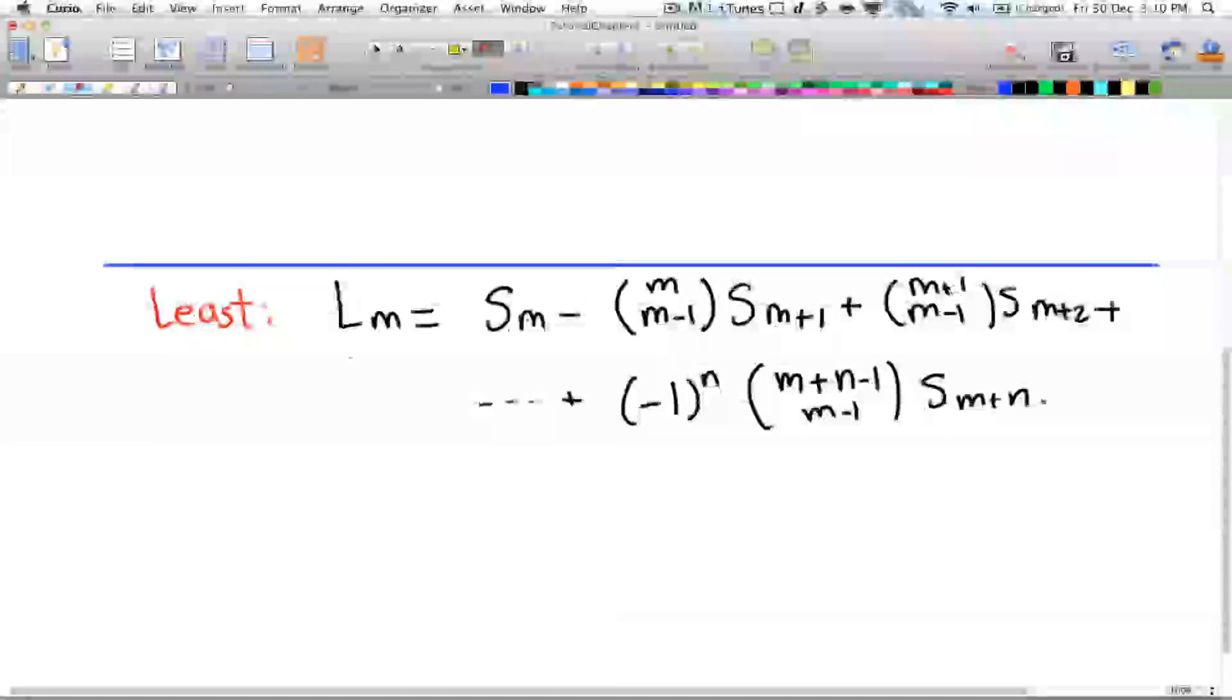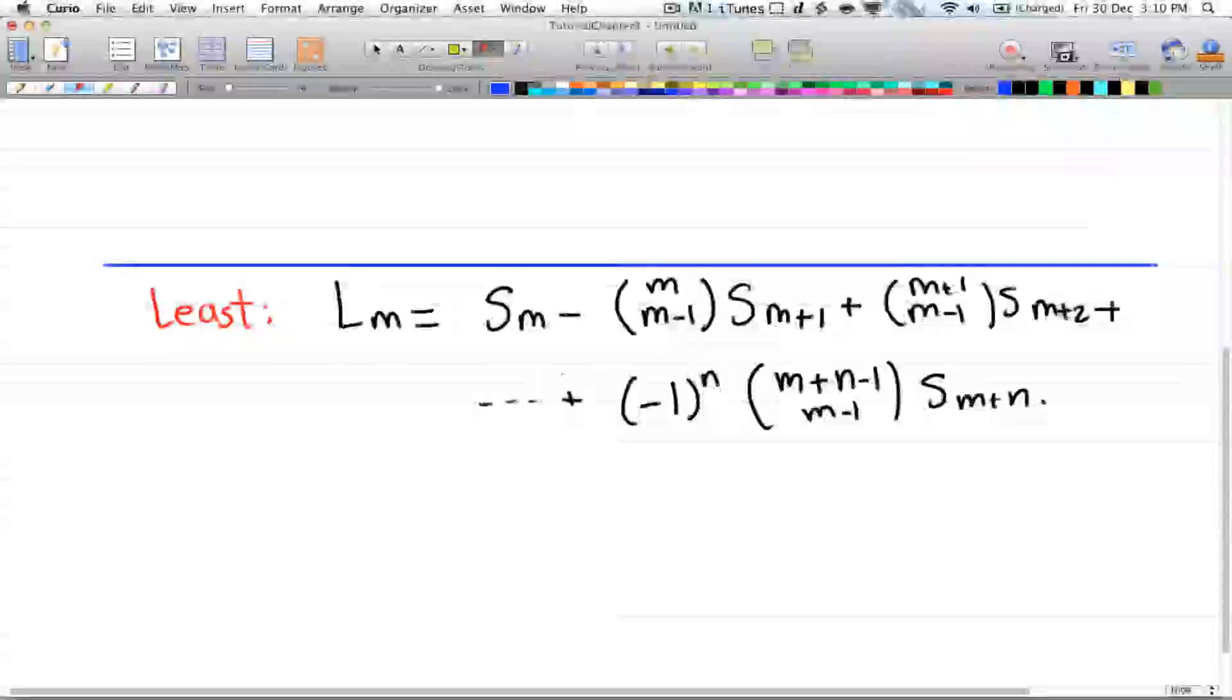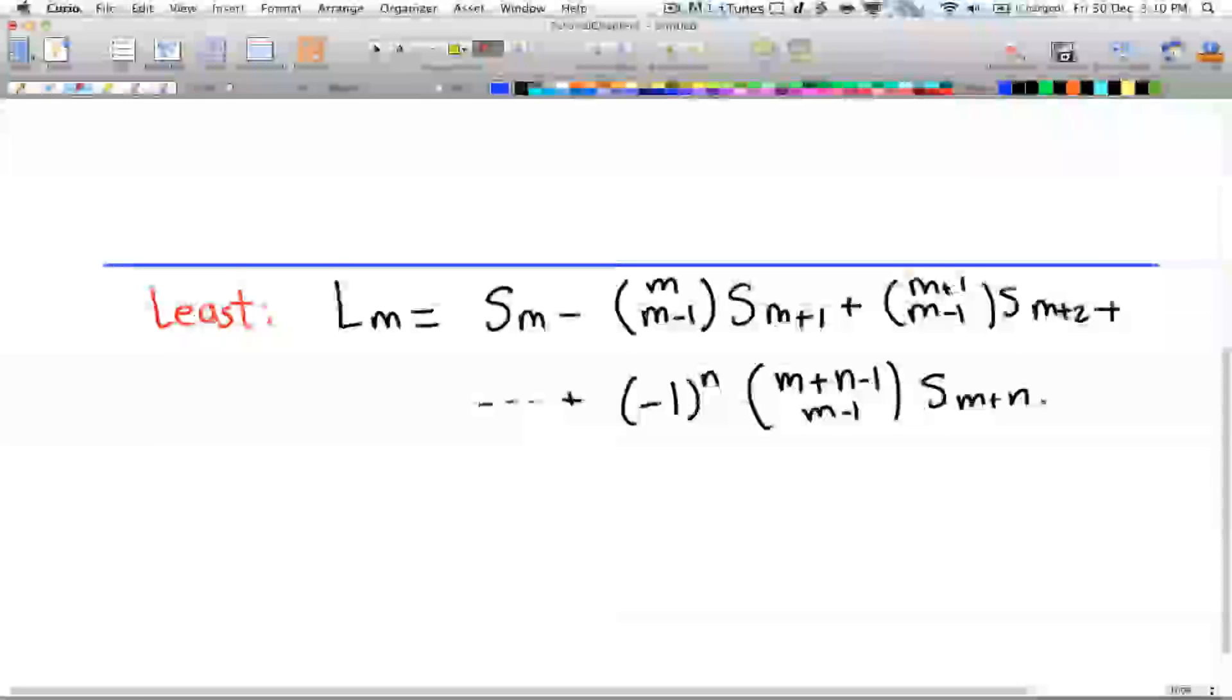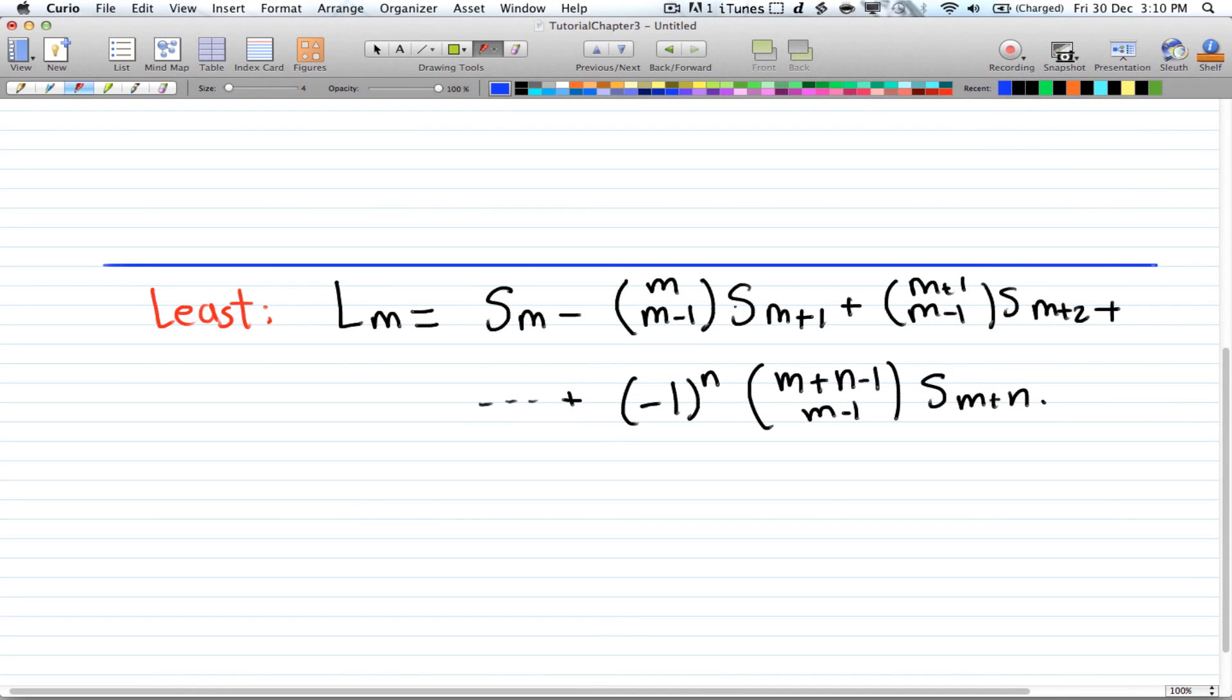So you have l of m equals s_m minus m choose (m-1) times s_(m+1) plus (m+1) choose (m-1). And notice that the lower term never changes, so it's always choose (m-1). And that's something to keep in mind. That's how I actually memorize it. Just know that m minus 1 is always at the bottom for at least.